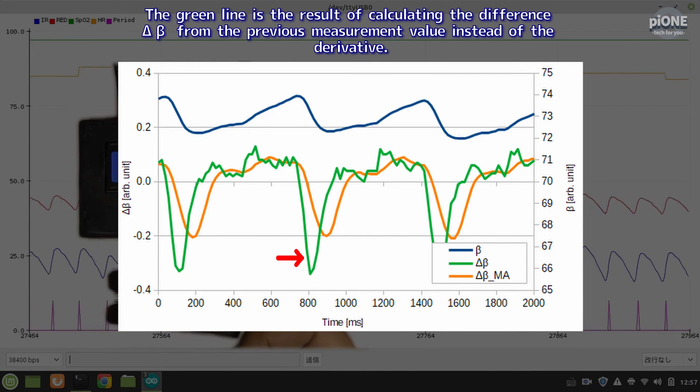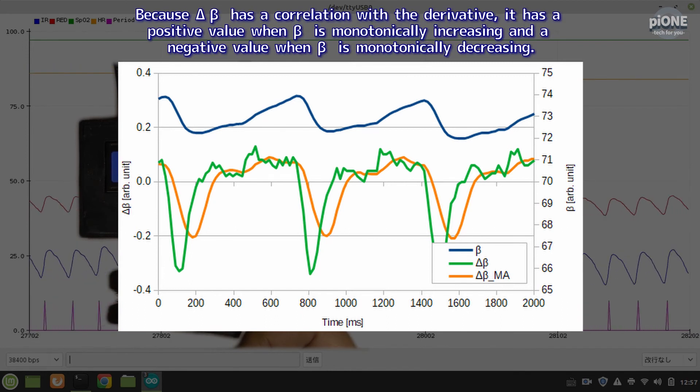The green line is the result of calculating the difference delta-beta from the previous measurement value instead of the derivative. Because delta-beta has a correlation with the derivative, it has a positive value when beta is monotonically increasing and a negative value when beta is monotonically decreasing.